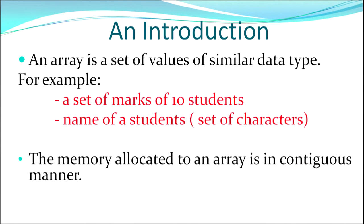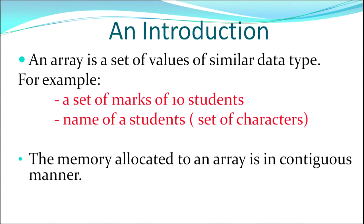Let us begin with what is an array. An array is a set of values of similar data type. Say for example, you want to store marks of 10 students. Whatever programming you have learnt, you will have to create 10 variables to store 10 numbers. So instead of maintaining 10 variables and entering data into 10 variables, we create an array where each data is of the same data type, and we can specify the size — the number of elements the array should contain. When memory is allocated to an array, it is in a contiguous manner, meaning it is stored in consecutive address locations.